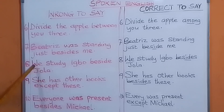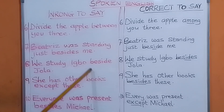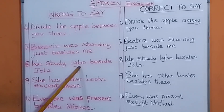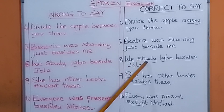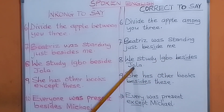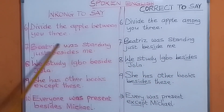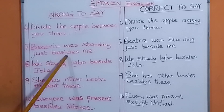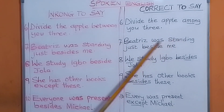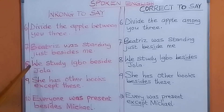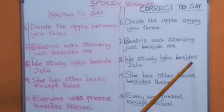Number eight: it is wrong to say 'we study evil beside Jola.' Don't say that. The correct way to say that is 'we study evil besides Jola.' 'Besides' with an S is the correct form here.